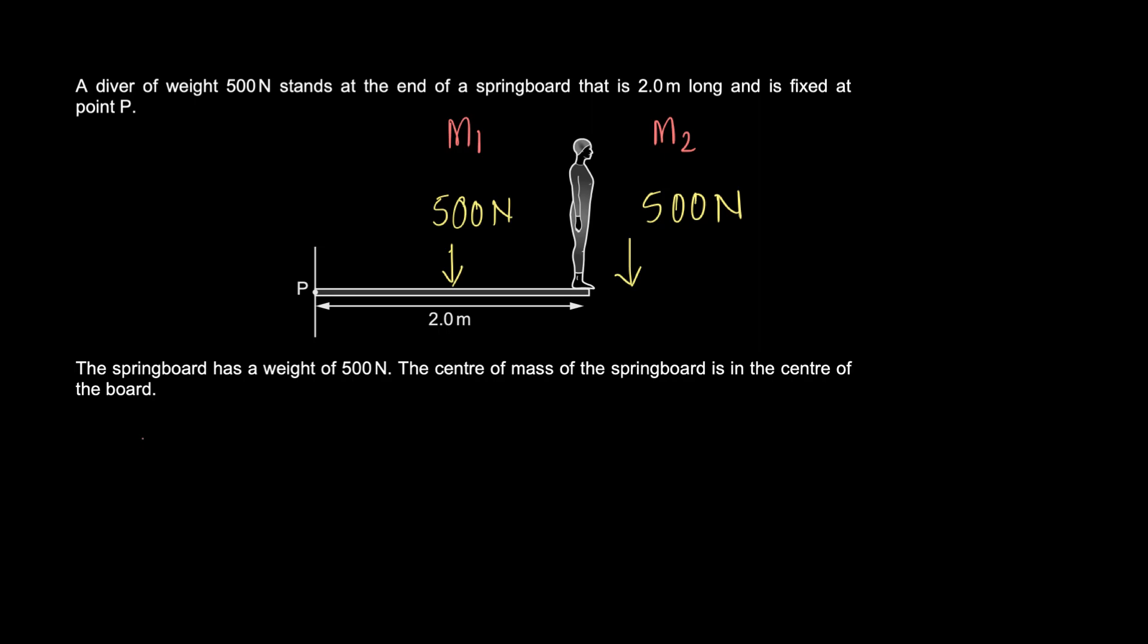Let's calculate the total moment about this point P or this pivot. The total moment is M which equals M1 plus M2, and I say that because I realize both are clockwise moments, so I'm just adding them together. M1 is 500 times 1 and M2 is 500 times 2, so that should simply be 500 times 3, which is 1500 Newton meters. The pivot is experiencing a torque or a moment of 1500 Newton meters.